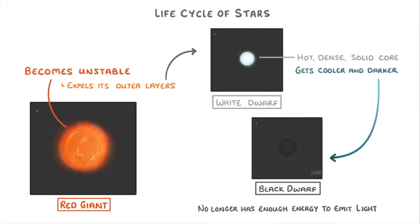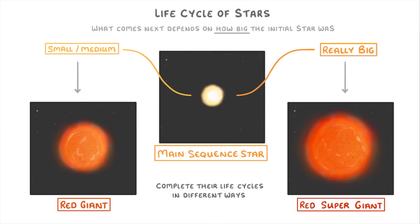Now, if we whisk back to the two options for our main sequence star, the other possibility for the really big stars was to turn into a red supergiant. So let's now look at these.